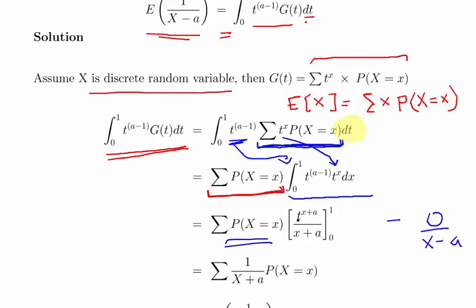And 1 to the power of x plus a is just 1. So what we end up with is the summation of p of x equal to x of 1 over x plus a.